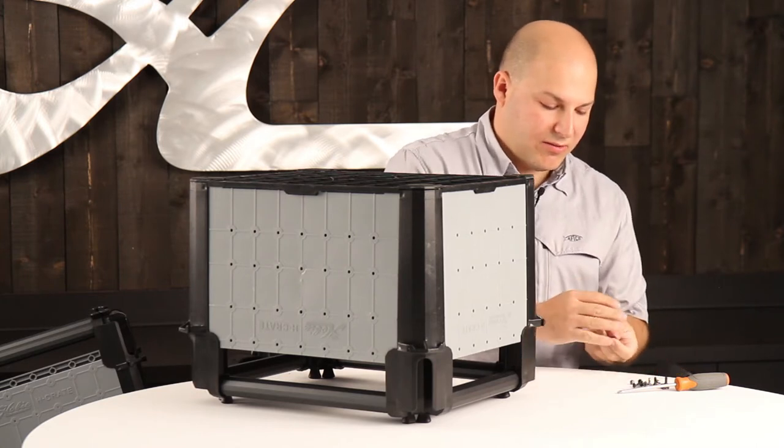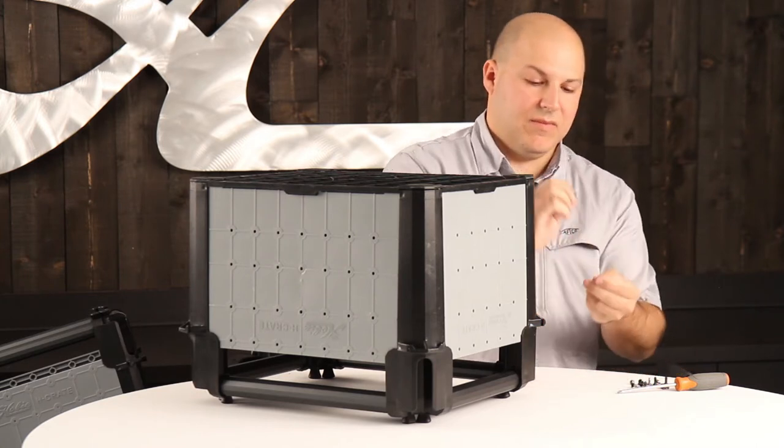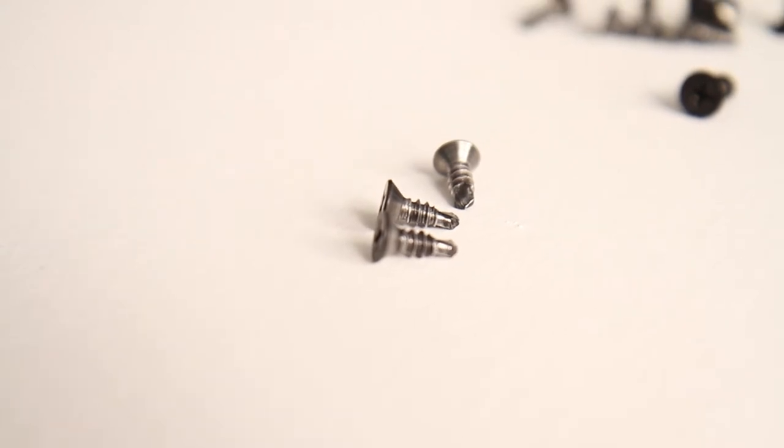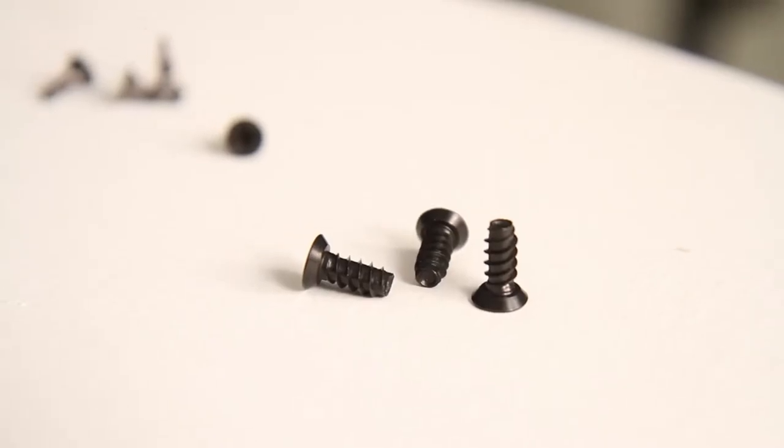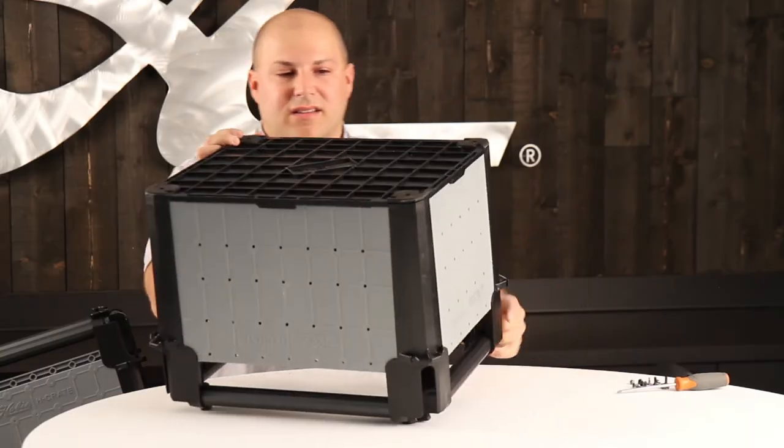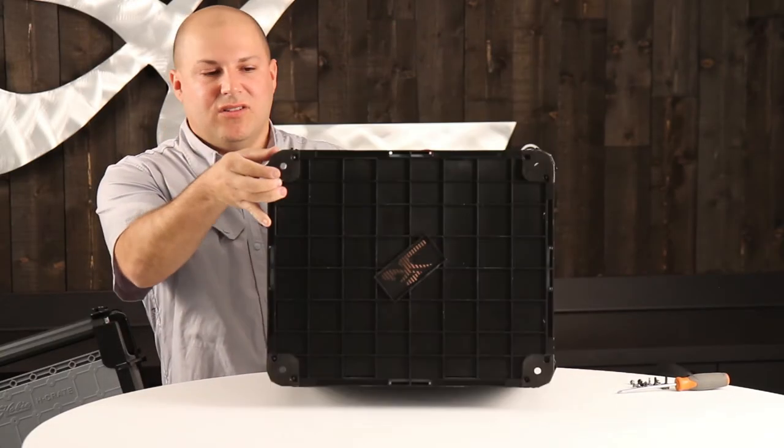There are two different types of screws with the kit. The self-tappers we'll use for later. These are plastic screws that go into the bottom. You can see each bottom has two screw holes on it.